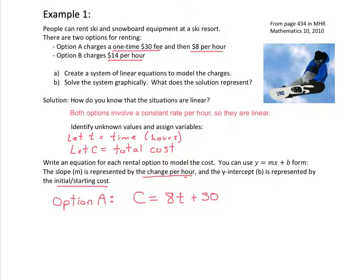For option B, you're going to have the cost of that option is equal to $14 times the number of hours that you rented for. So, here we have a system of linear equations.